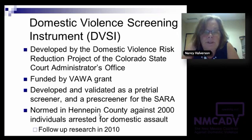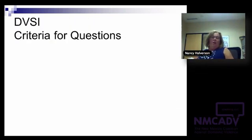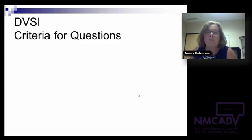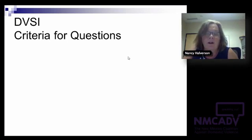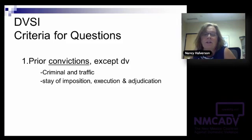In our jurisdiction we have cases with a stay of imposition — where the court accepts a guilty plea, stays sentencing, and gives the person a probationary period — under Minnesota Statute 609.135. A stay of execution is where the court imposes a sentence, say 365 days in jail, stays 355 days, meaning they serve 10 days and the rest is stayed during probation. We also have a stay of adjudication, where the prosecutor accepts a guilty plea in writing but it's not entered into the court record. The operative word for item one is prior convictions, excluding domestic violence.